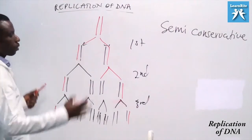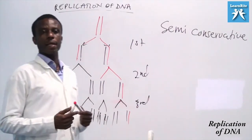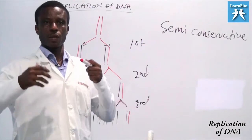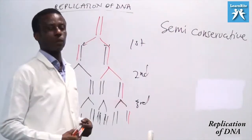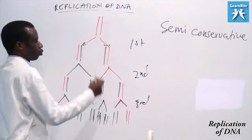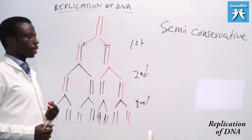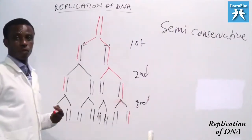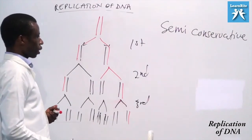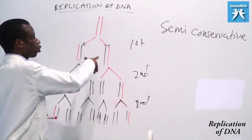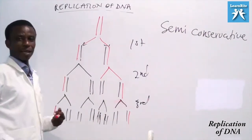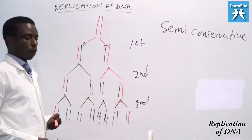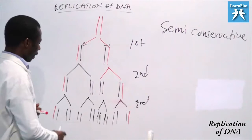After the first replication, how many DNA molecules? The original molecule can be put into two. After the second replication, how many? Four. After the third replication, how many? Eight.